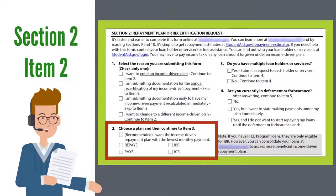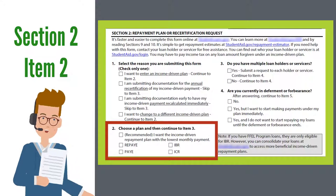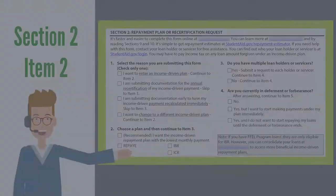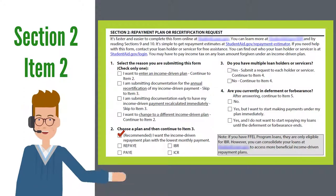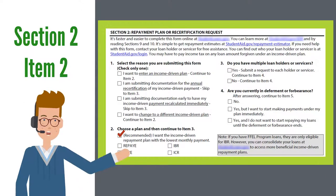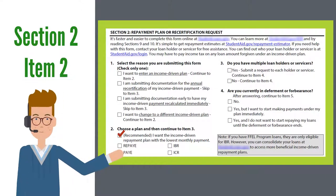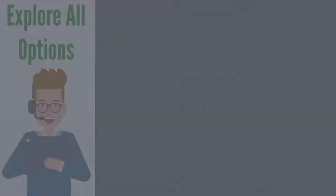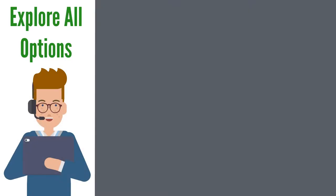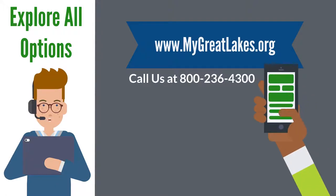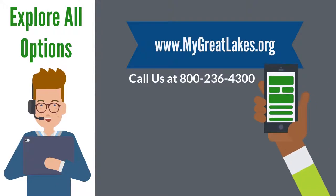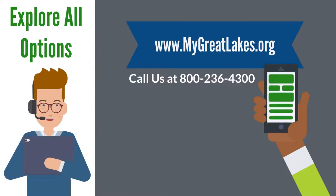Item 2 asks which repayment plan you'd like to enter into. Selecting the first box ensures your eligibility for each plan is evaluated and you are placed in the one with the lowest monthly payment. To further explore all options, you can visit our website at www.mygreatlakes.org or give us a call at 800-236-4300.